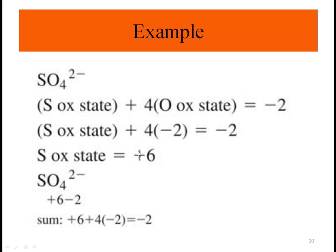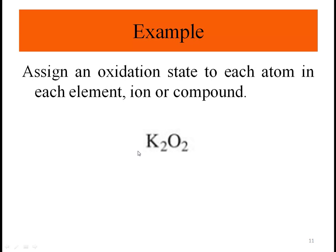The next example is K2O2, which is a very good example. Normally, the oxidation state of oxygen is minus two and potassium is plus one because it belongs to Group 1A. Since this is a neutral compound, the sum must equal zero. But if we assign minus two to oxygen and plus one to potassium, we get two times plus one plus two times minus two, which equals minus two — so that's incorrect.